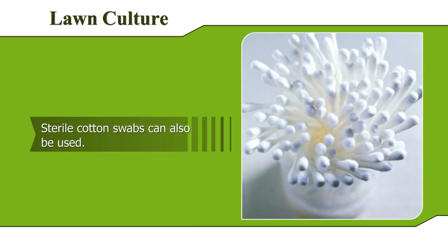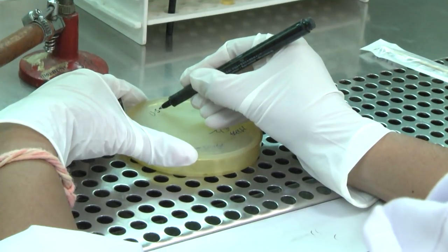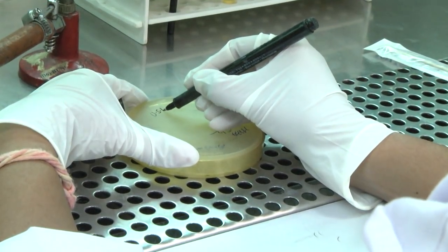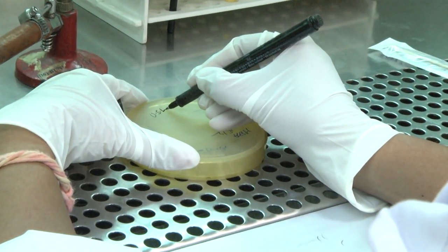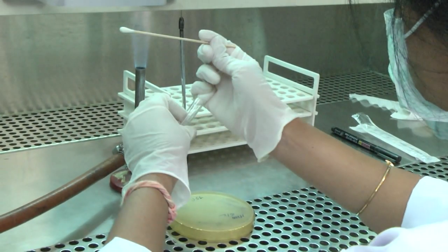Alternatively, sterile cotton swabs can also be used — this is the preferred method and will be described here. All the general precautions while inoculating media are to be followed. Label the base of the plate before you start the procedure. Loosen the cap or cotton wool plug of the bottle or test tube containing the broth culture.